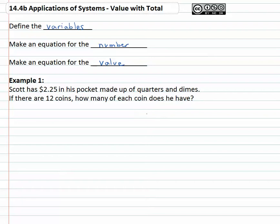So for example, if Scott's got $2.25 made up of quarters and dimes and there are 12 coins, how many of each does he have? We see he's working with quarters and dimes. So let's define our variables. Let's pick q for quarters, the number of quarters and d for dimes or the number of dimes.